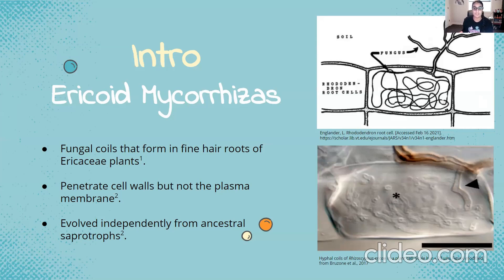From the outside of the roots, these fungi penetrate cell walls and ultimately form intracellular coils that can densely pack individual plant cells. However, the fungi do not penetrate the plasma membrane of plant cells. Evidence suggests that coils only function for a period of a few weeks before the plant cell and the fungal hyphae begin to degrade and new associations are formed. Furthermore, scientists have robust evidence to support that this symbiotic relationship has evolved independently several times from ancestral saprotrophs — fungi and bacteria involved in degrading organic matter in the soil.